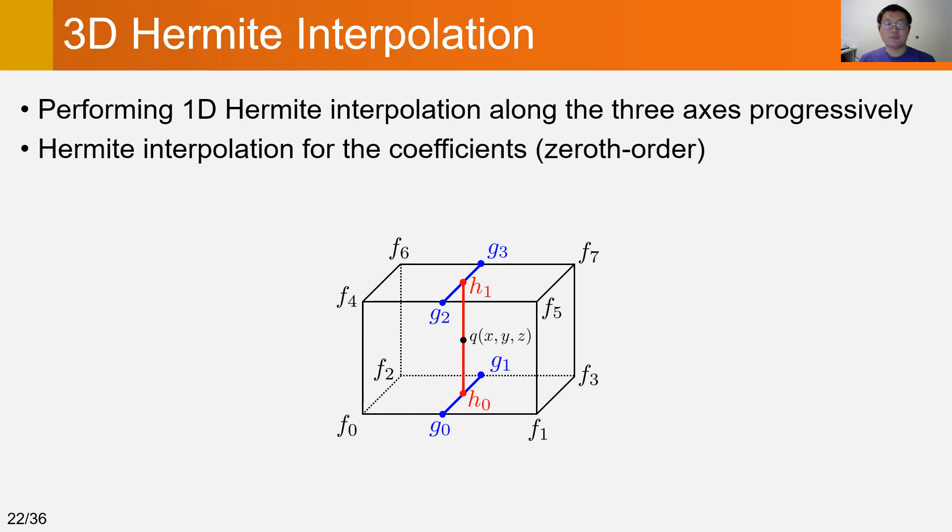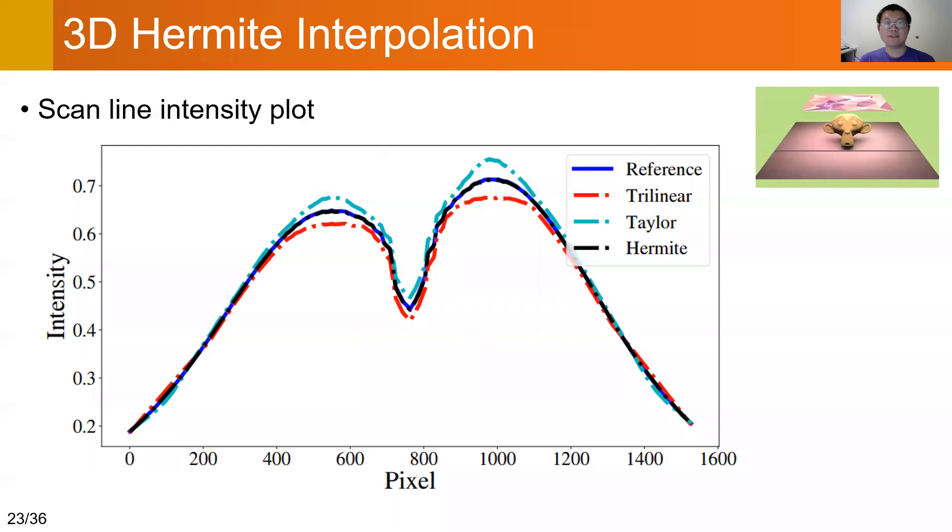We use Hermite interpolation for the SH coefficients. But we use trilinear interpolation for the SH gradients because we don't have the second-order derivatives.